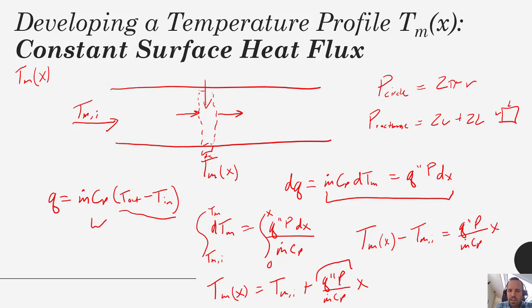If we have constant surface flux and all these other things are constant, if the pipe is uniform as you go down, the perimeter doesn't change, and if it's an incompressible fluid with constant cp and constant m dot, you can see that this is just the equation of a line.